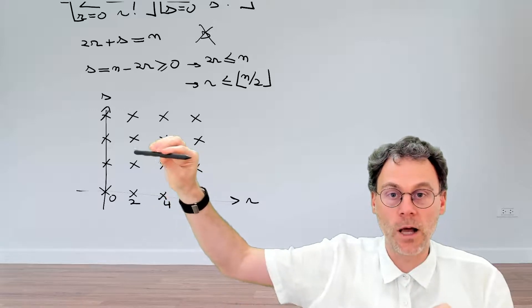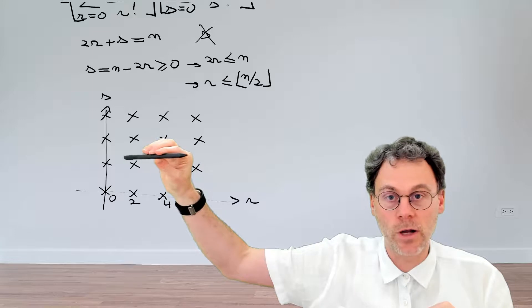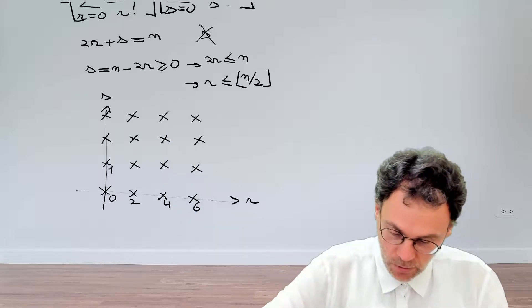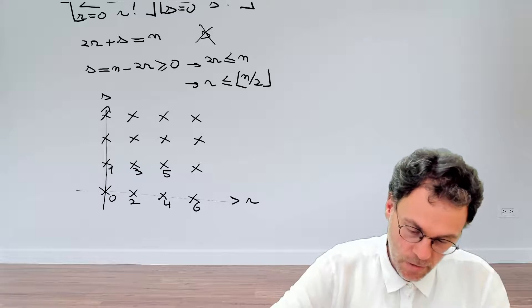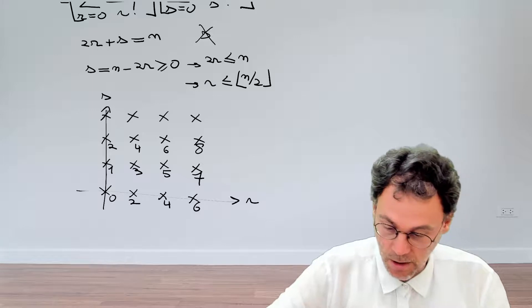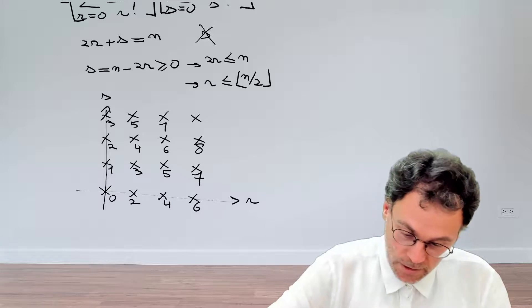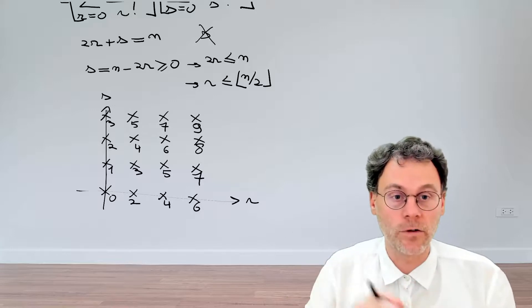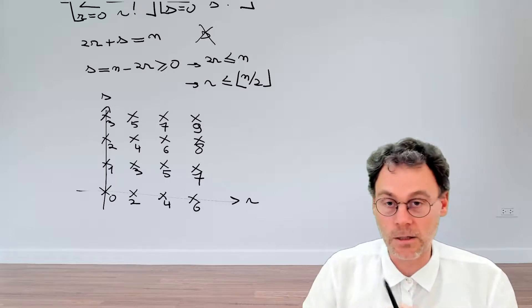If we now move up one line, we have a situation where s is equal to 1. So we just add 1 to the values we had on the row below. 1, 3, 5, 7. Then we keep going 2, 4, 6, 8, 3, 5, 7 and 9. So now we have an idea where the different values of n are located in this diagram.